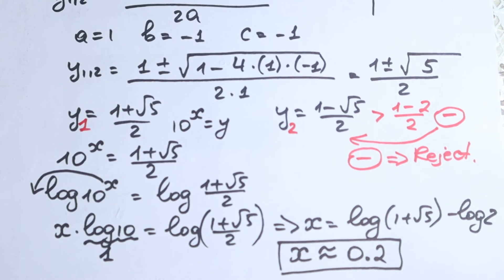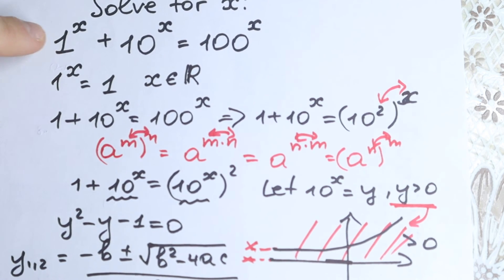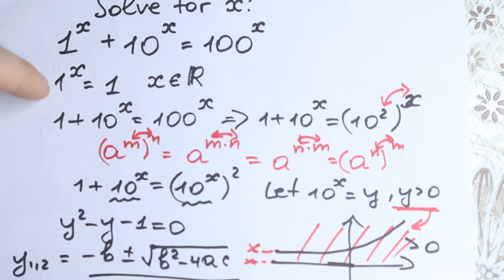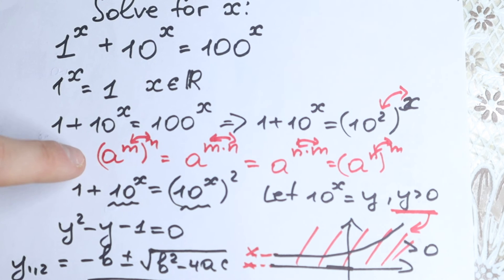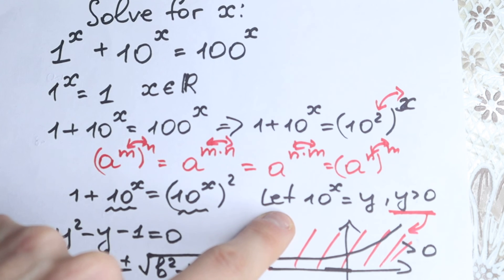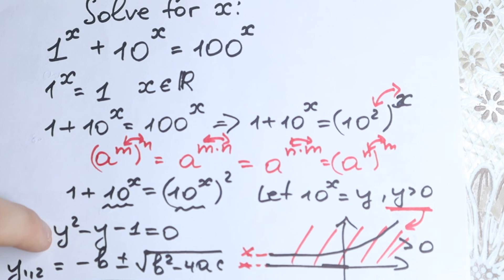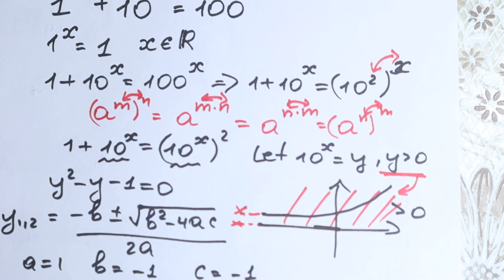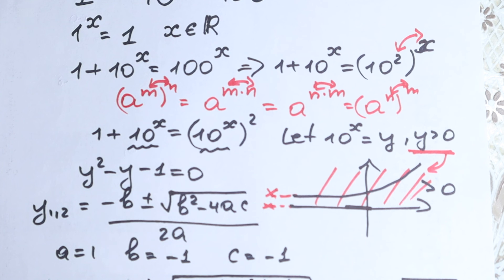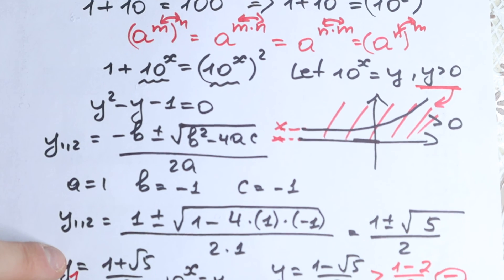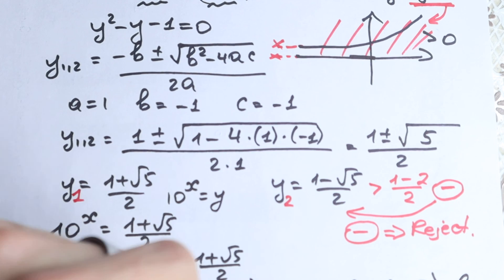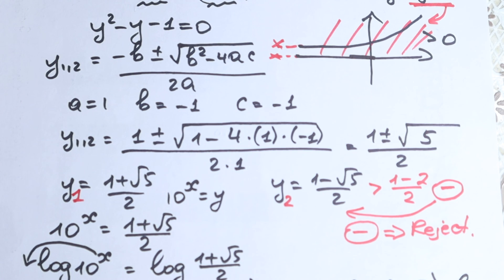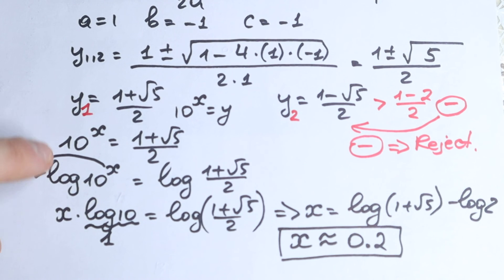Let's spend one more minute to recap step by step. First, 1 to the x equals 1 in real numbers. Second, the rule of interchange — this is how we create the quadratic equation with the substitution. That is the main difficult step: you need to train the ability to see and create this quadratic equation. Once you see the quadratic equation and apply the substitution, solving it gives two cases. The second case will typically be negative — one positive, one negative — and we take the positive solution.